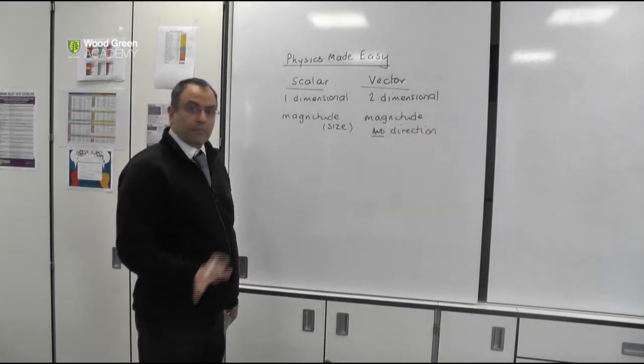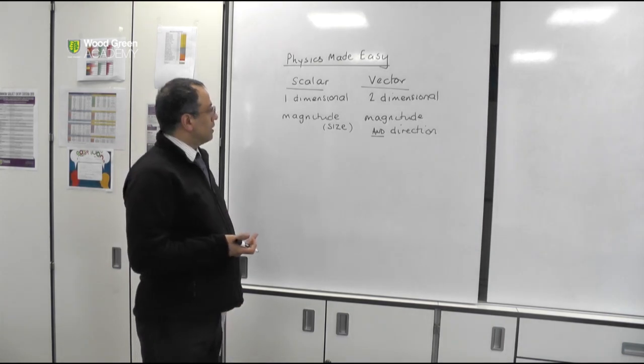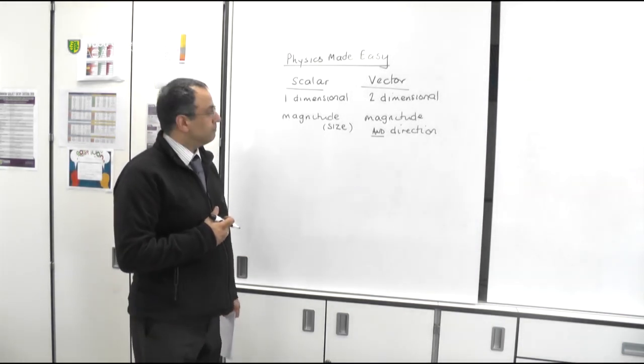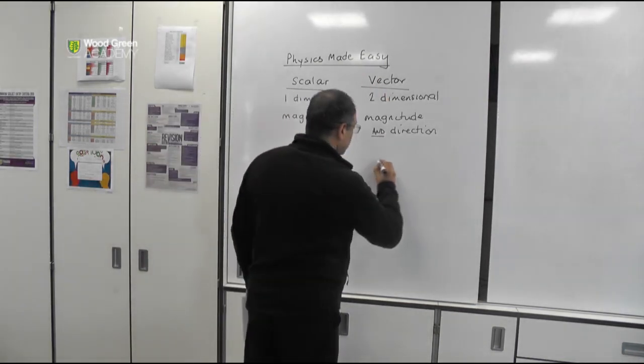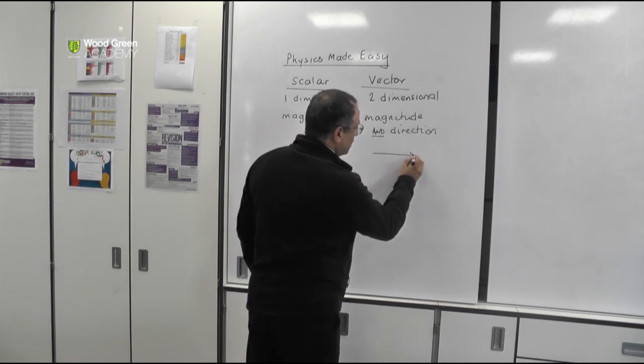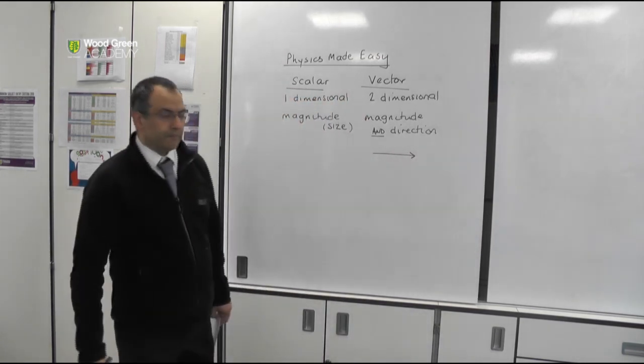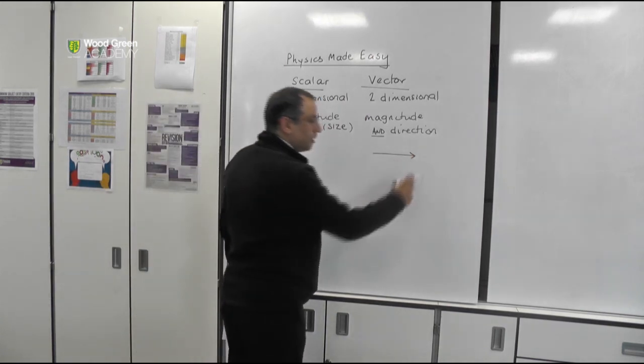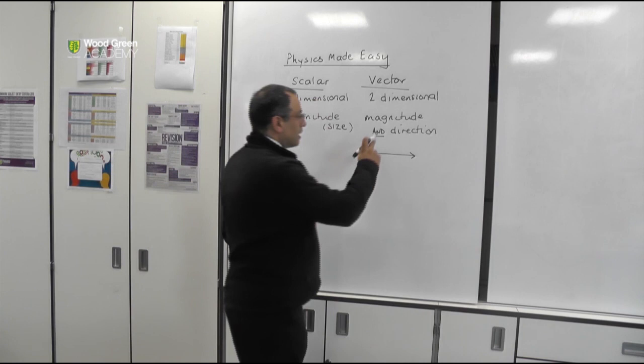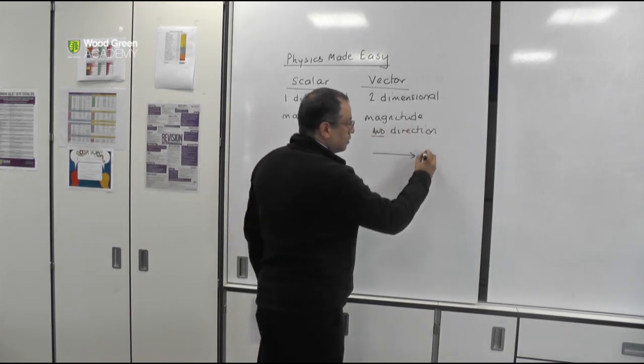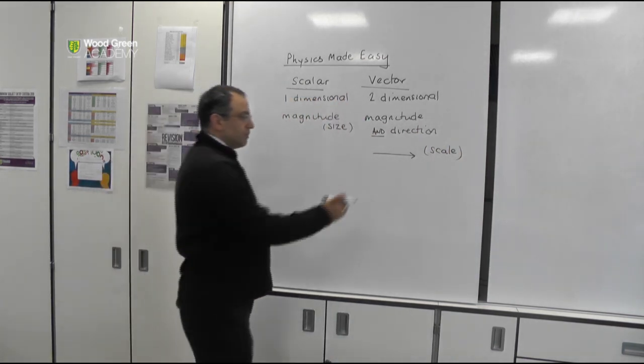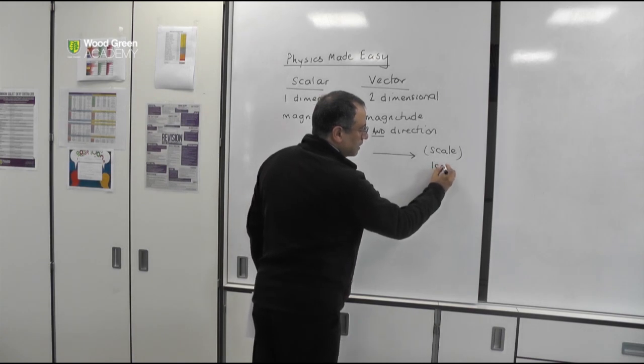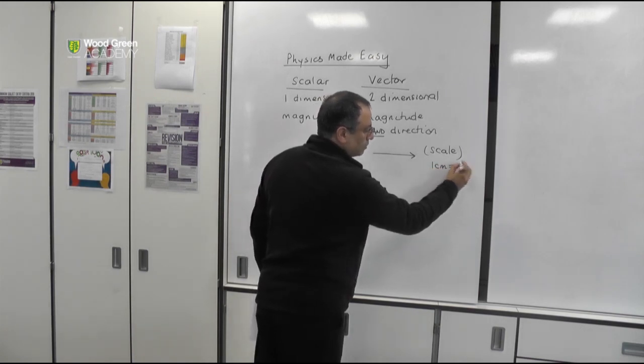Because this is just an amount, it's just a number, we don't have to represent it in any special way. Anything that is a vector, we represent that by a line with an arrow at the end of the line. The length of that line is a measure of the size, so you may need a scale. For example, you may say that one centimeter is one, or ten newtons.